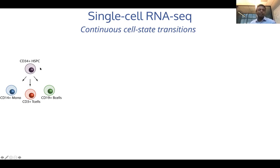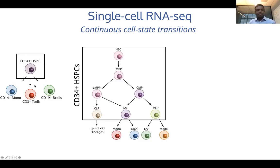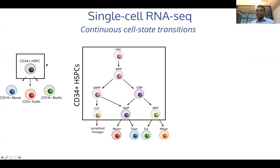Here, as a simple representation of human hematopoiesis, we have CD34 stem and progenitor cells which give rise to, as a simplification, just these three cell types. When we zoom in, this can really be opened up into multiple different cell types or cell states going through different progenitor cells until we reach these more mature, functionally differentiated cell types.